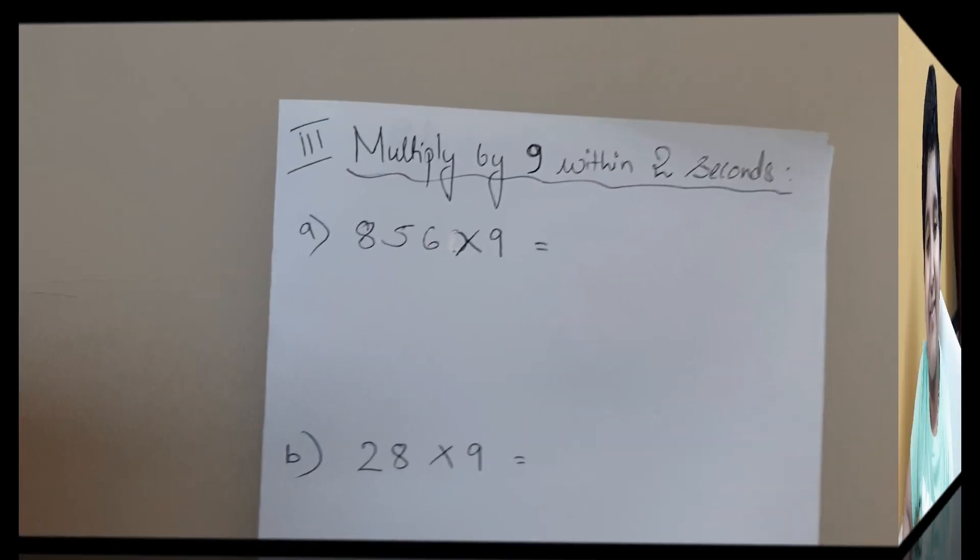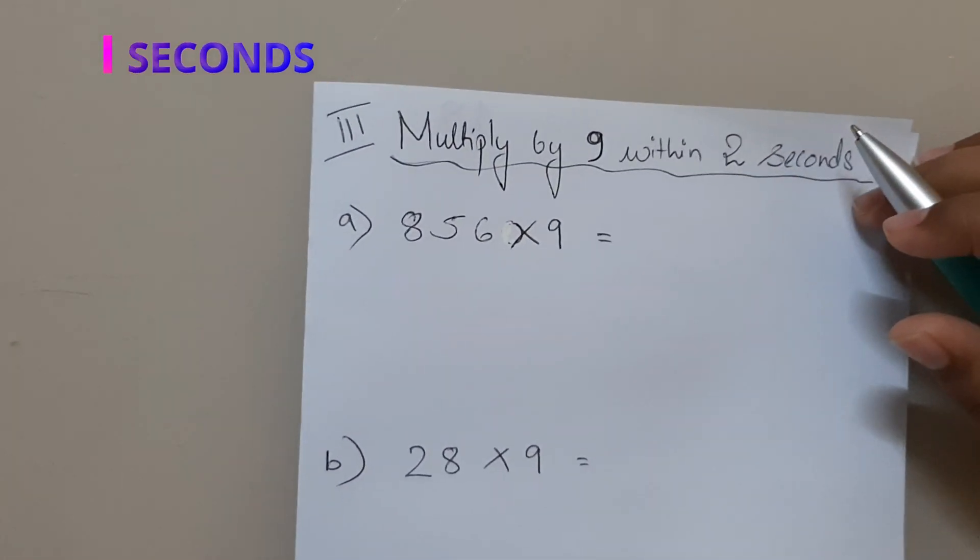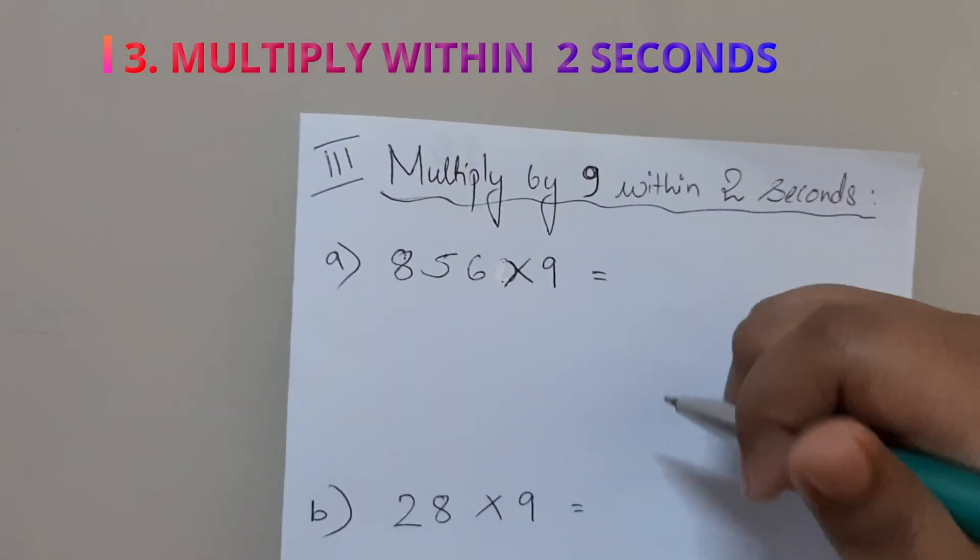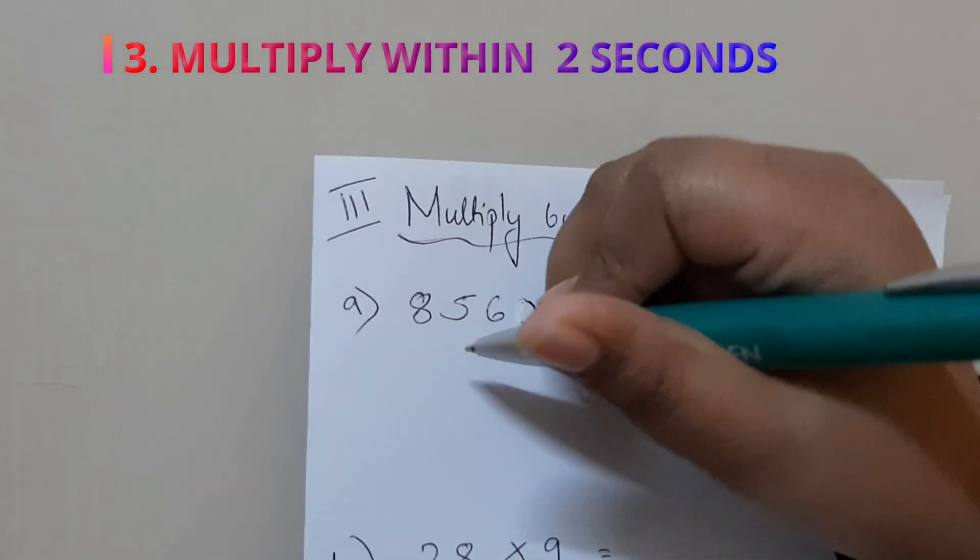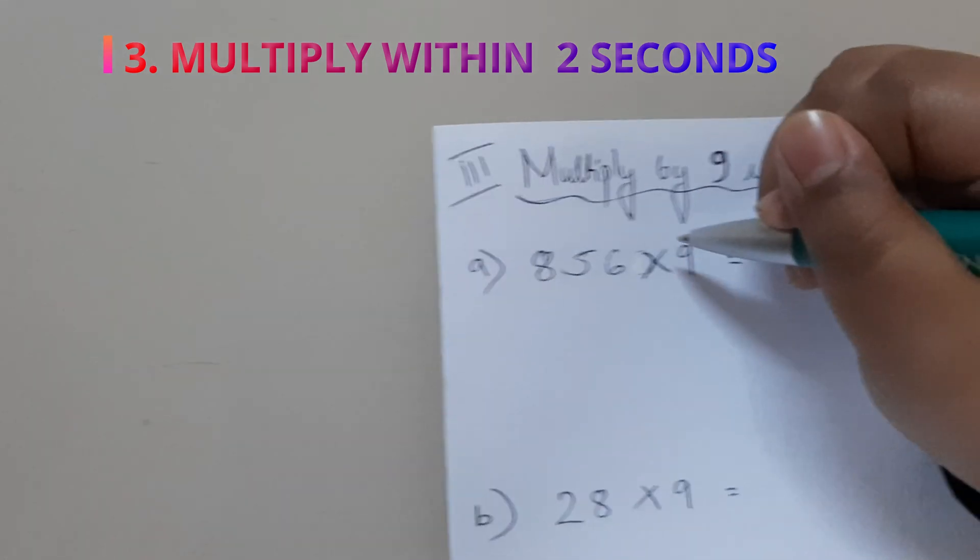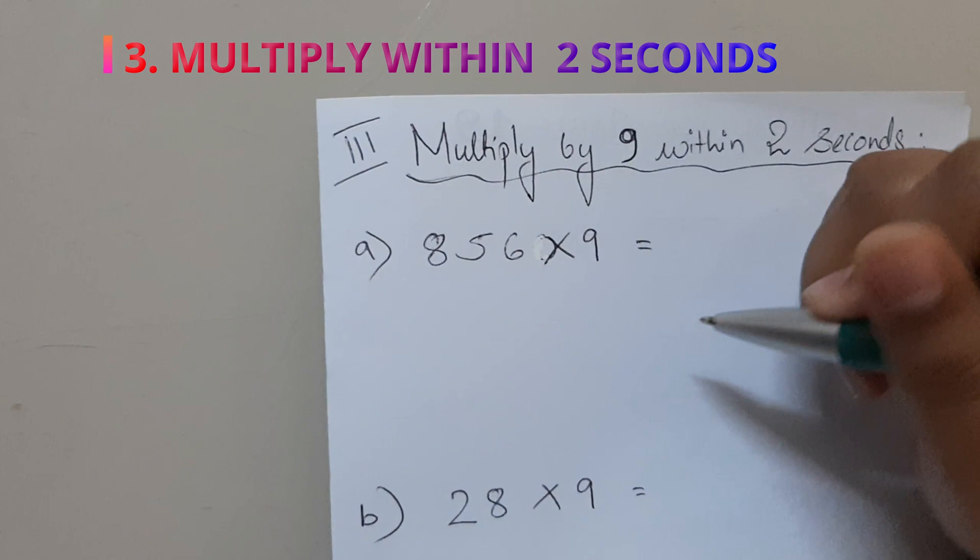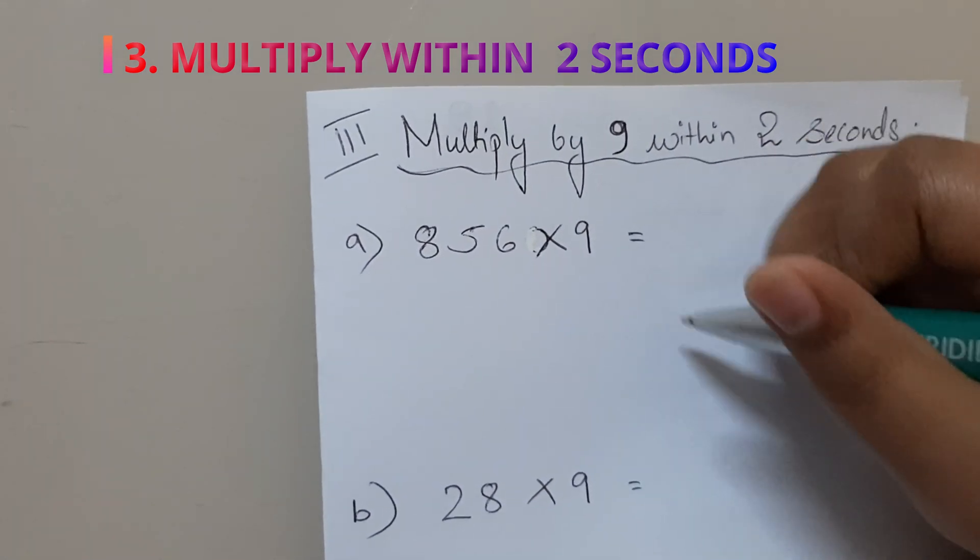Now the third trick is how to multiply a number by 9 within 2 seconds. So this first sum is 856×9. We just have to add a zero to the number.